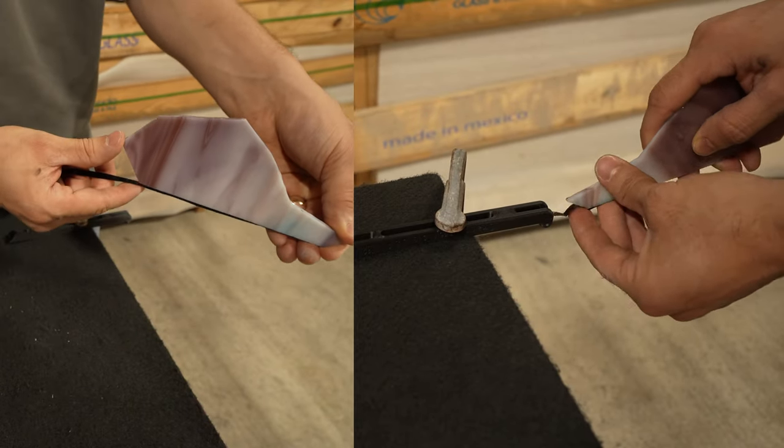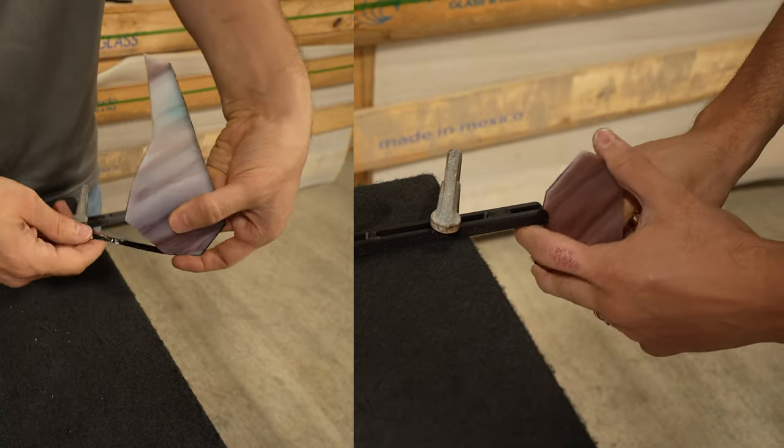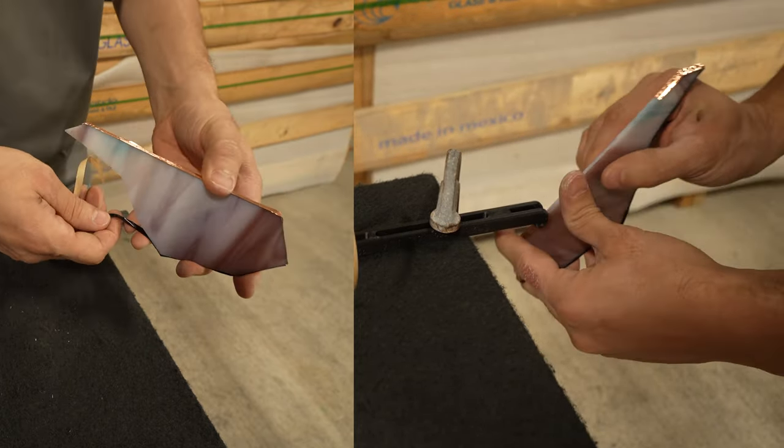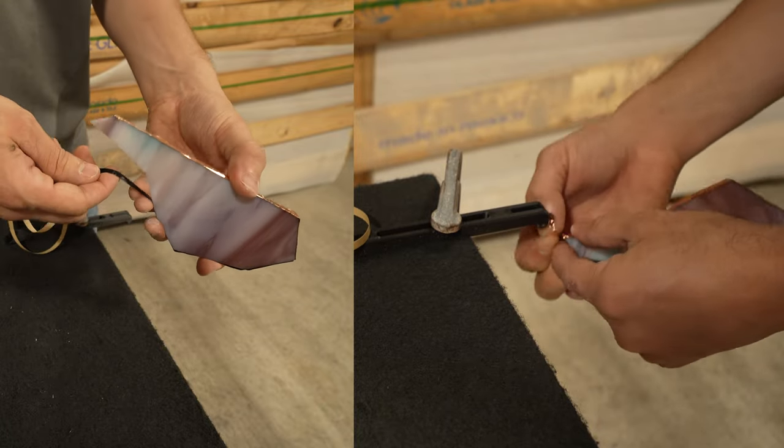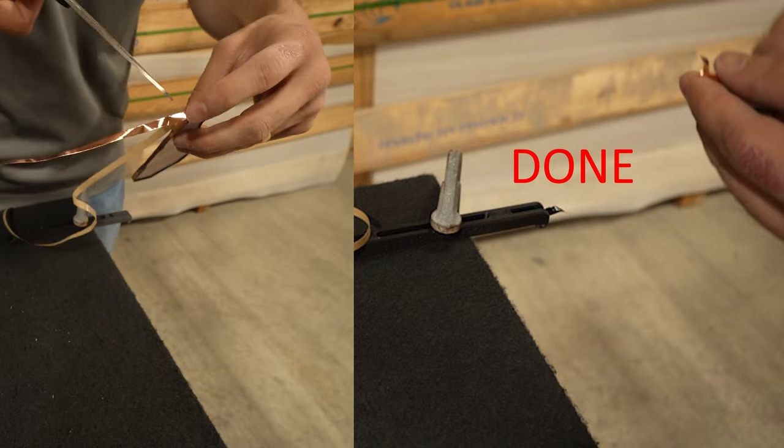To test the speed, I did the exact same piece by hand and one on the creator's foiler. I was able to foil the piece with the creator's foiler about 19 seconds faster. It may not seem like much, but if you do that 100 times, that's about 30 minutes. It certainly adds up.